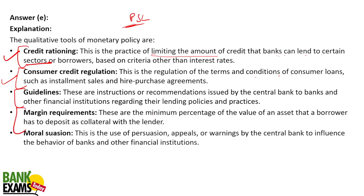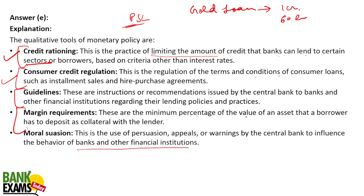Margin requirement: this is the minimum percentage of the value of an asset that a borrower has to deposit as collateral. For example, if the value of gold is one crore and you are taking a loan of 60 lakh rupees, that illustrates a margin. Moral suasion is the use of appeals, persuasions, or warnings by the central bank to influence the behavior of banks and other financial institutions. These are all qualitative measures that RBI can take.